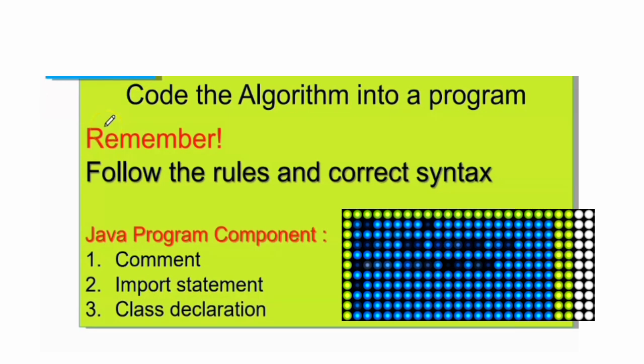Number three: code the algorithm into a program. Remember to follow the rules and correct syntax. Writing a Java program requires a programmer to follow its syntax. Basically, a Java program has four main components.